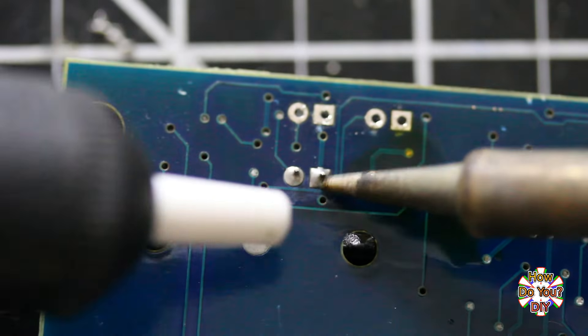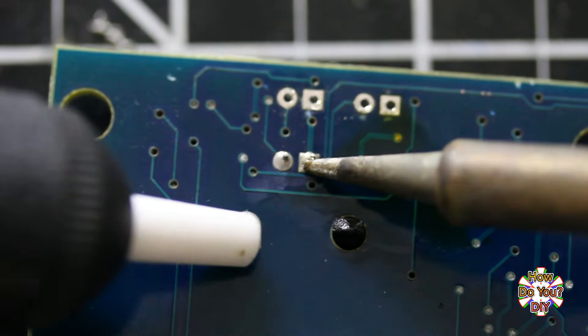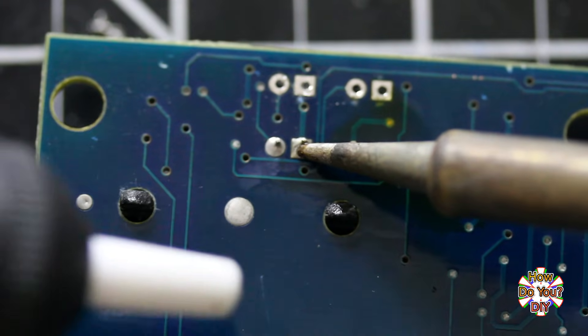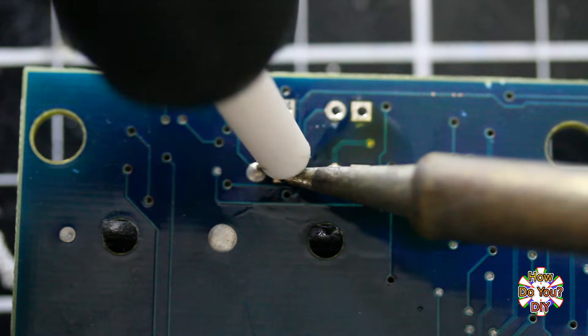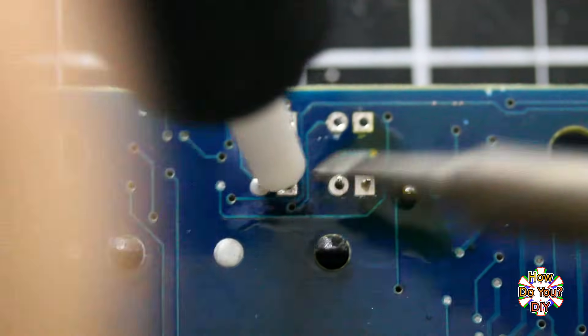Heat the solder directly with the soldering iron with the tip of the solder sucker nearby. The plastic tip is heat resistant, so you can have it in direct contact with the soldering iron, and it shouldn't melt.